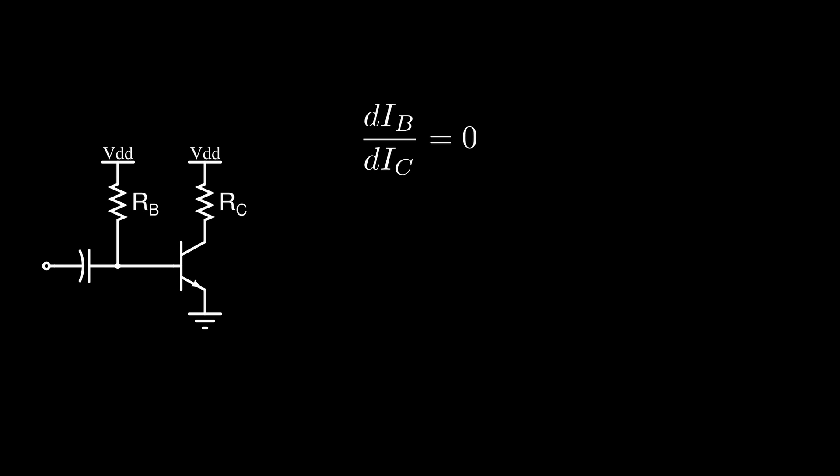No matter what happens to IC, IB will always be VDD minus VBE over RB. Thus our stability factor S will be simply one plus beta. And obviously this is not good, so let's discard this circuit.